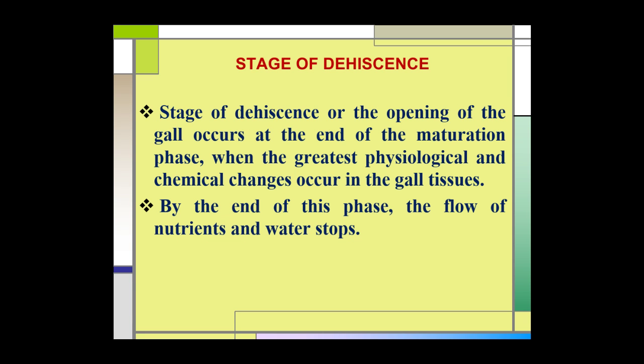The last and fourth stage is the stage of dehiscence. The stage of dehiscence, or the opening of the gall, occurs at the end of the maturation phase, when the greatest physiological and chemical changes occur in the gall tissues. At the end of this phase, the flow of nutrients toward the gall and also water stops. These are the four phases of gall development.